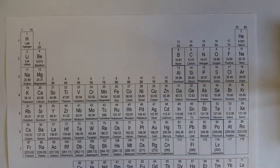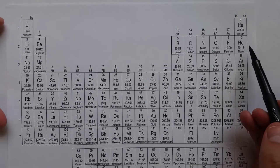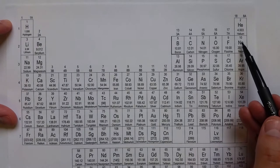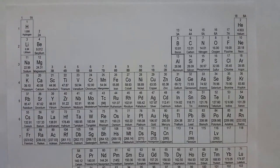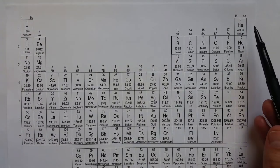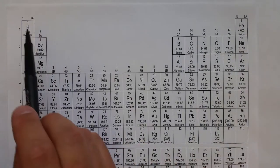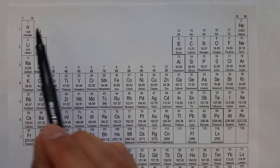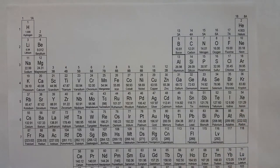Using the octet rule, we can predict the charges that elements will always form. The octet rule says that most elements react to achieve eight valence electrons, like the noble gases in group 18 or 8A. A subset of that would be smaller elements like hydrogen, lithium, and beryllium, which can react to get two valence electrons like helium.